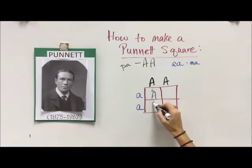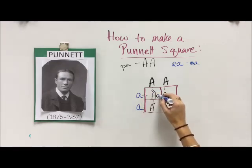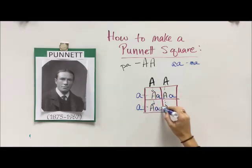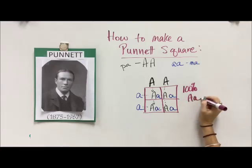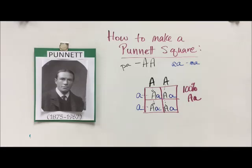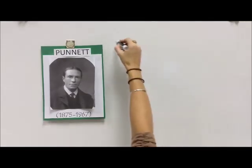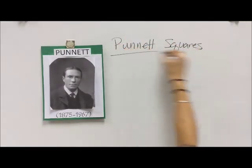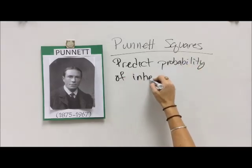The letters on the top are going to cruise down, so we take big A down into the two boxes below, and then the other big A into the two boxes below as well. Then our A's on the side go across — little a goes across to the two boxes, and little a goes to the two boxes across. Now we have a completed Punnett Square. We can see that 100 percent of the boxes have big A little a, so the outcome for these two parents is that all of their kids are going to be heterozygous.